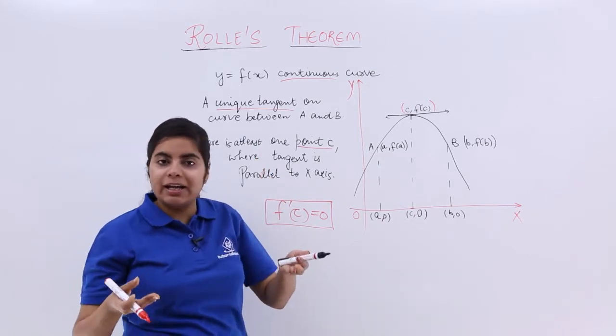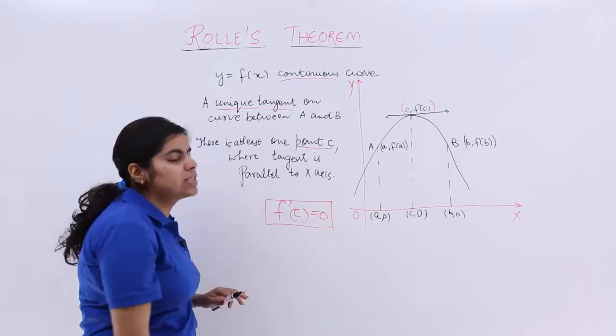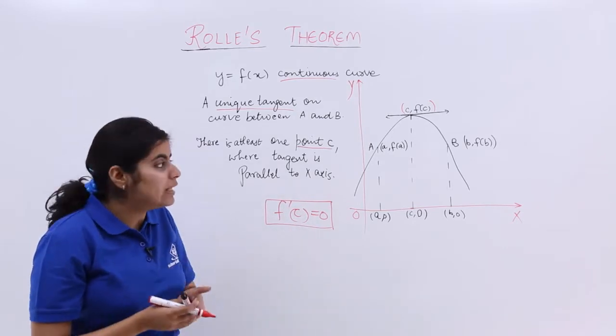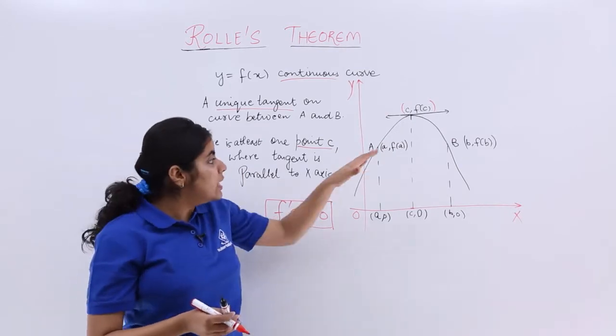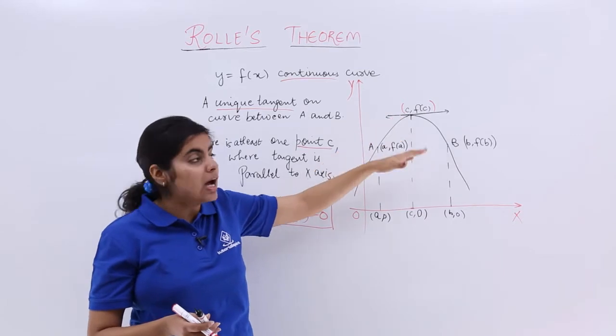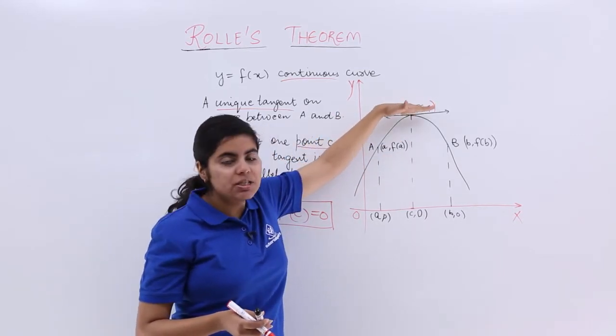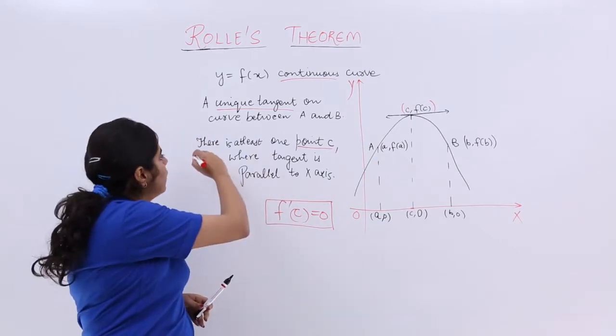But because this video is dedicated to the geometrical interpretation, I say that f'(c) equal to 0 means what? That there exists a unique tangent wherein the value is f(c) and c according to the ordinate and abscissa, and wherein the tangent is so unique it is parallel to the x-axis. That is what is written.